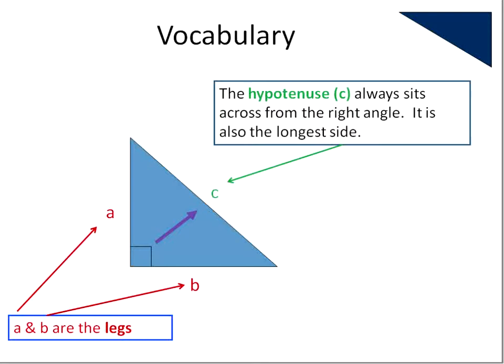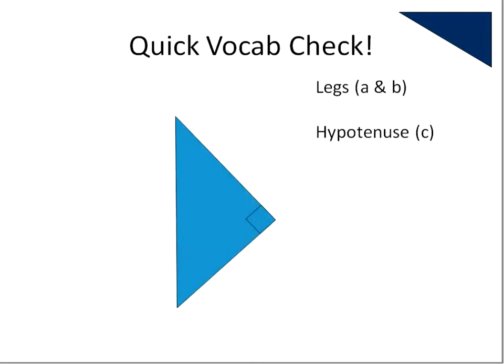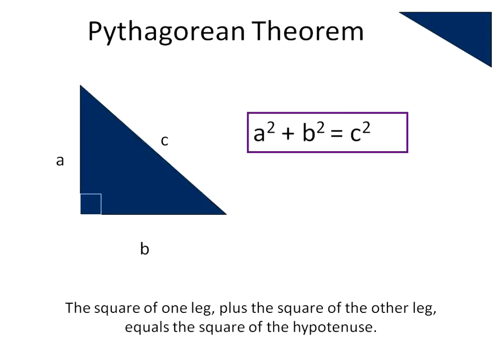Here's a picture of the different parts — the legs are the shorter lengths. C, the hypotenuse, is always opposite the right angle. Quick check: which ones are the legs and which one is the hypotenuse? This is either A or B, this one is either A or B, and this is C because it's opposite the 90-degree angle. That will make this our longest side length, the hypotenuse.